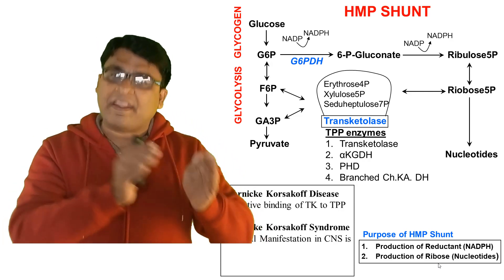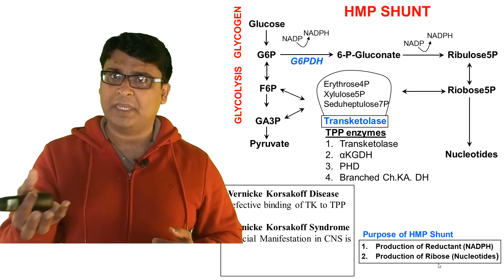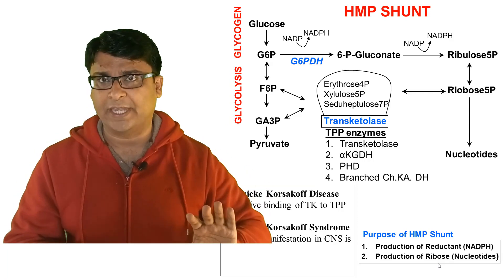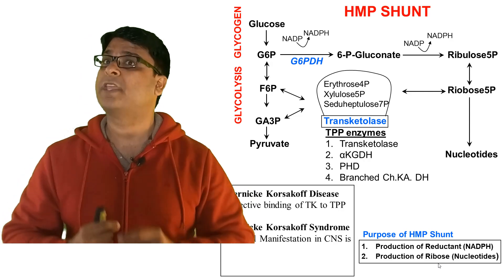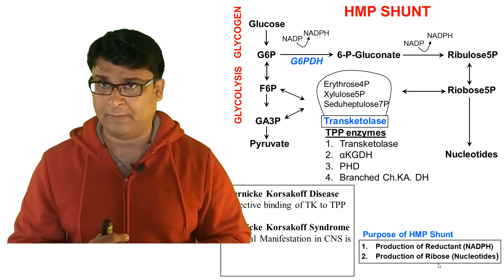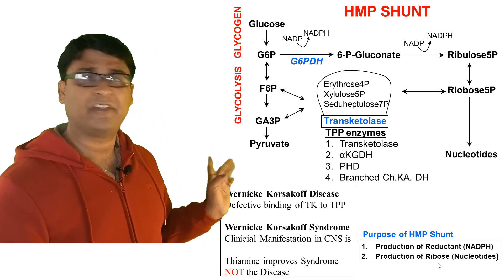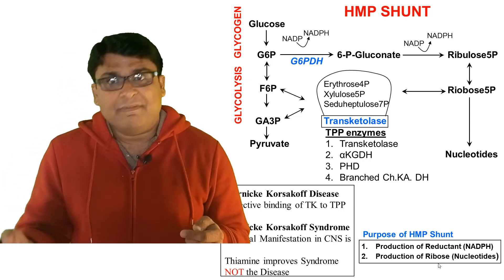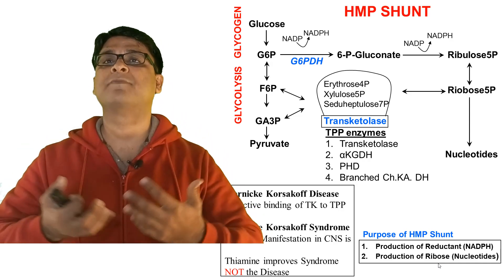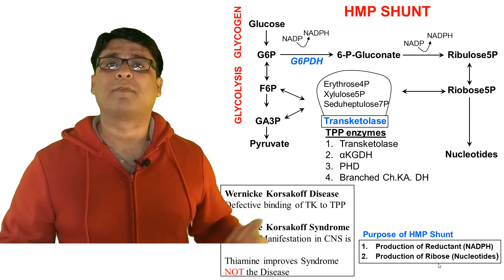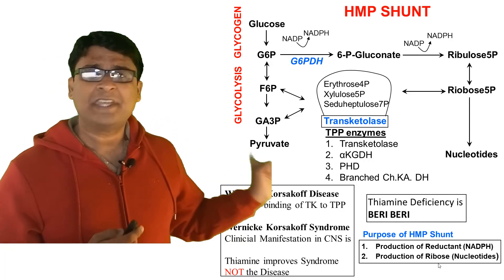Students often confuse Wernicke-Korsakoff disease with Wernicke-Korsakoff syndrome — please understand there is a difference. The disease is the genetic mutation, and when clinical neurological manifestations appear as a result, that is the Wernicke-Korsakoff syndrome. If you give a lot of thiamine to these patients, the syndrome — the symptoms — will be treated, not the disease, because by giving thiamine you are not correcting the mutation; you are just making the symptoms go away.